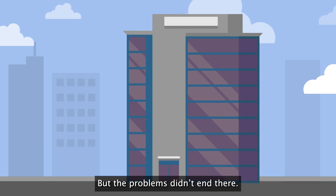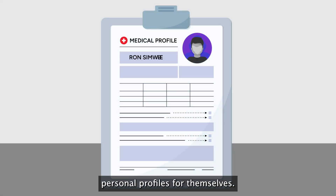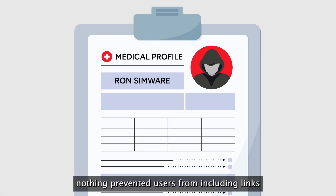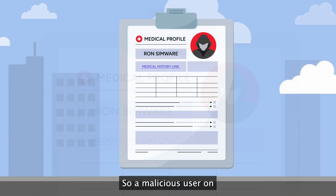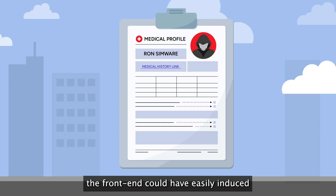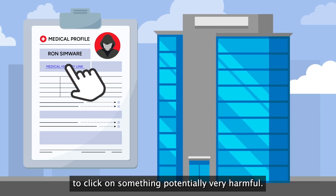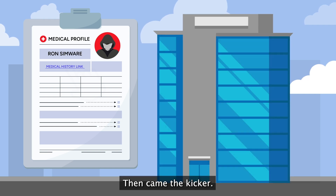But the problems didn't end there. The application let front-end users create personal profiles for themselves. While this may have been a useful feature, nothing prevented users from including links or scripts in their profiles. So, a malicious user on the front-end could have easily induced a customer employee on the back-end to click on something potentially very harmful.